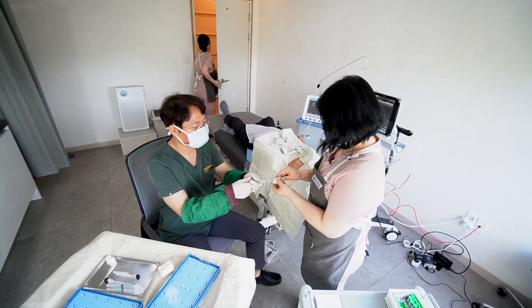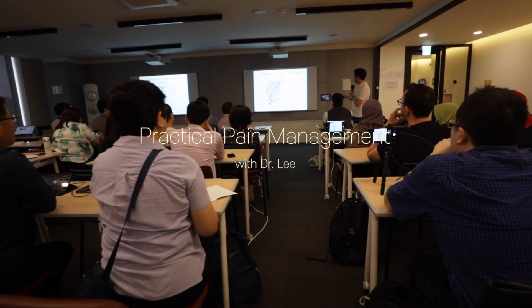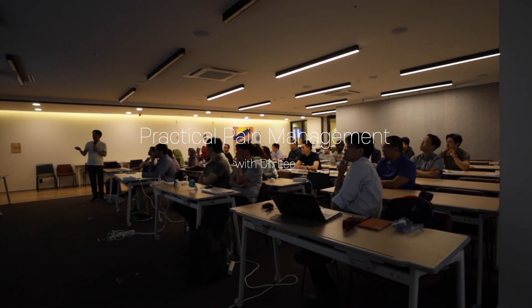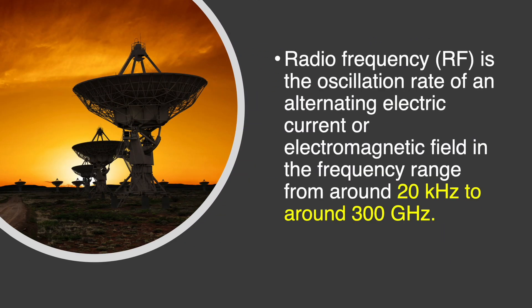I am going to anesthetize the skin before RF needle insertion. What is radio frequency range? Radio frequency is the oscillation rate of an alternating electric current or electromagnetic field in the frequency range from around 20 kHz to about 300 GHz.